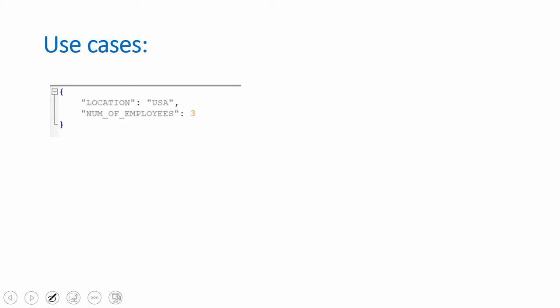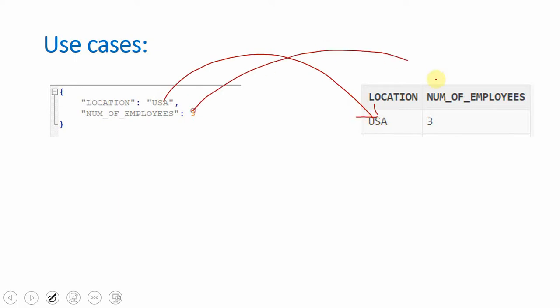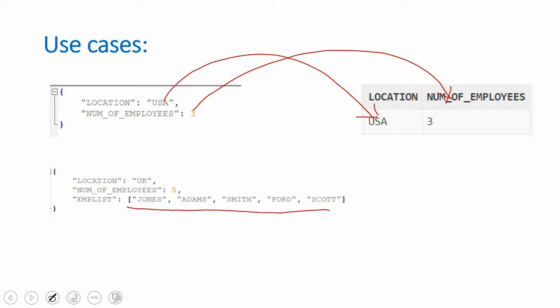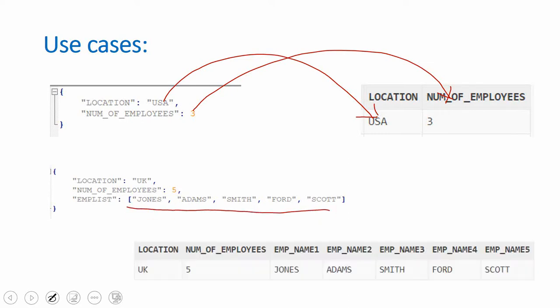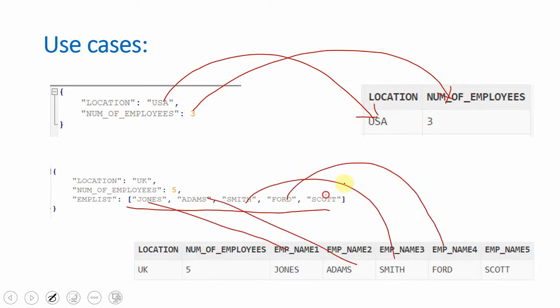This functionality we are going to learn through two use cases. In the first use case we are going to store JSON into the database and extract this information as relational data — for example, the location and the number of employees stored as a string containing a JSON document. In use case 2, we are going to take a more complex JSON where we have stored an array of employee list and write a SQL to extract all that information and the names.